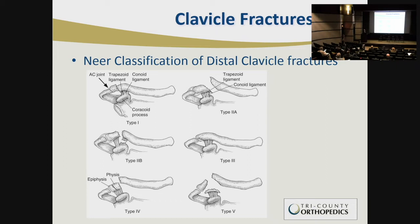In a Neer type 1, the acromioclavicular joint is fractured but the coracoclavicular ligaments are intact with the proximal fragment — essentially a stable injury. In type 2A and 2B, there's disruption of that, so the clavicle elevates, making it a more functionally limiting injury. A type 3 is an intra-articular distal clavicle fracture that is stable because the CC ligaments remain intact. Types 4 and 5 are more comminuted fractures.